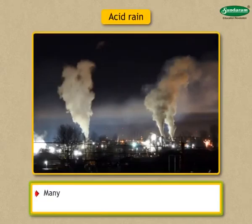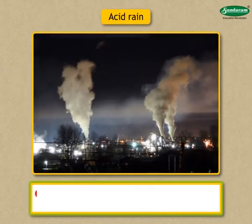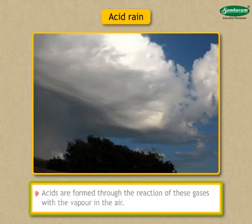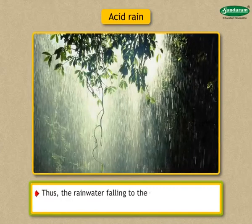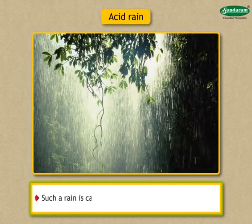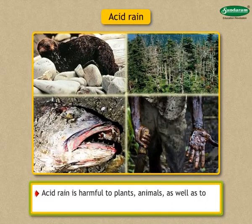Acid rain. Many gases get mixed in the air due to pollution in industrial areas. Acids are formed through the reaction of these gases with the vapour in the air. Thus, the rainwater falling to the ground in these areas contains acids. Such rain is called acid rain. Acid rain is harmful to plants, animals, as well as to human beings.